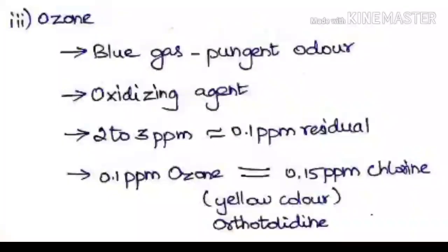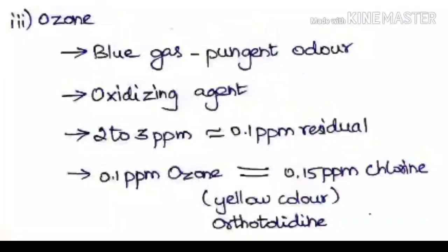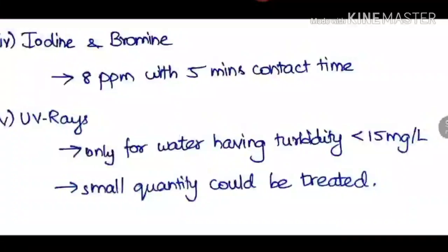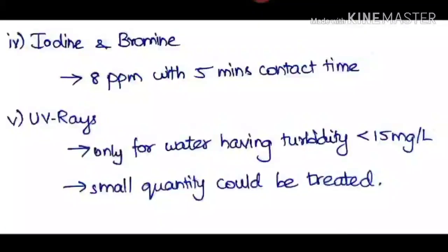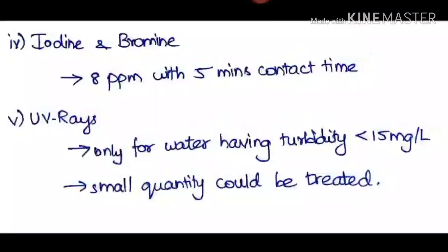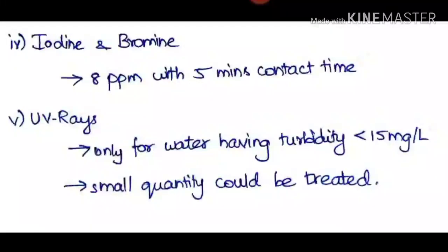The next method is iodine and bromine. Iodine and bromine are added at nearly 8 ppm with a contact time of 5 minutes. It also cannot be used on a larger scale; it is minimized for usage in swimming pools and small-scale treatment plants.